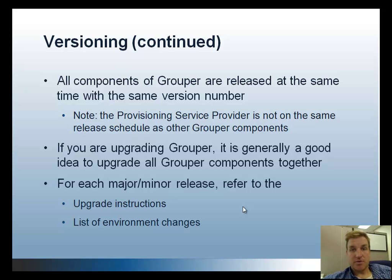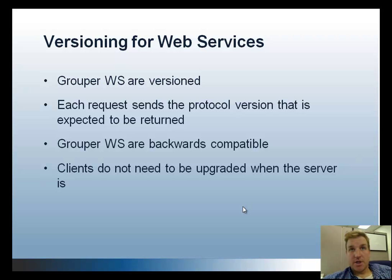Grouper web services are versioned, and each request to the web service sends the version number to the server so it knows which protocol to use. That makes Grouper web services backwards compatible, so clients do not need to be upgraded when the server is upgraded. They would only need to be upgraded if they need to take advantage of new functionality.